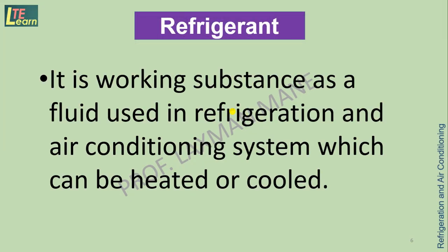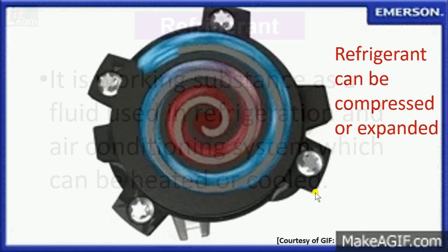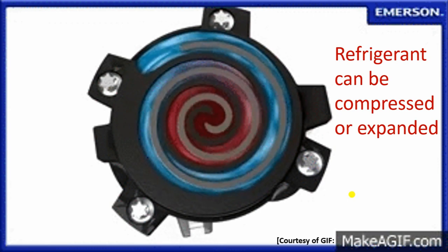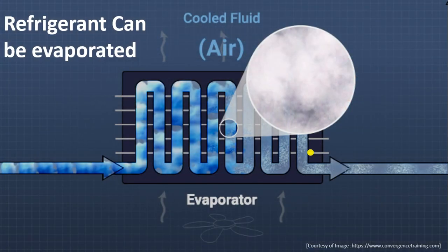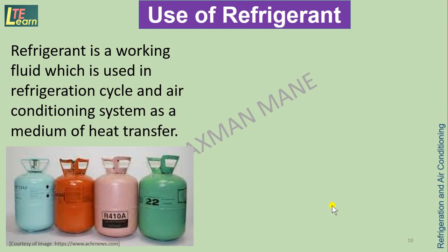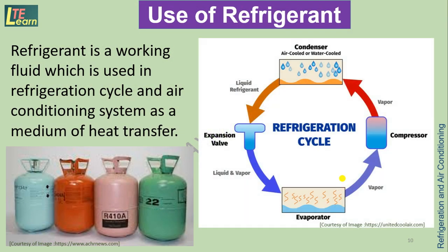Refrigerant is a working substance — a fluid used in refrigeration and air conditioning systems — which can be heated or cooled. Refrigerant can be compressed or expanded. It can be evaporated or condensed. Refrigerant is a working fluid used in refrigeration cycle and air conditioning systems as a medium of heat transfer.